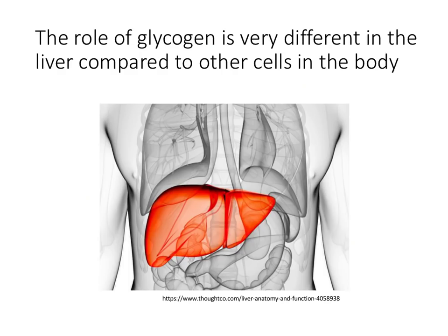It is important to understand that the role of glycogen stored in the liver is very different from that of glycogen in other cells. Liver glycogen is specifically for maintaining blood glucose levels — when glycogen gets broken down in the liver, it's to release glucose out into the blood. Glycogen in all other cells in our body is for use in that cell where it is stored, for glycolysis and to make ATP.